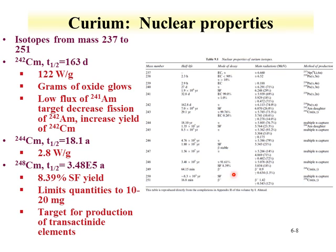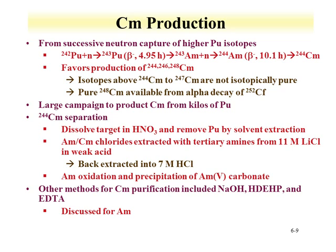Routes for the production of curium-242 through curium-248 generally involve multiple neutron captures from lighter targets. An example of this successive neutron capture production is shown where plutonium-242 eventually makes its way through capture, beta decay, and capture to curium-244. Further capture on curium-244 produces isotopes up to the 248. The even isotopes are favored in production mainly because of the higher fission cross-section for the odd-A isotopes.